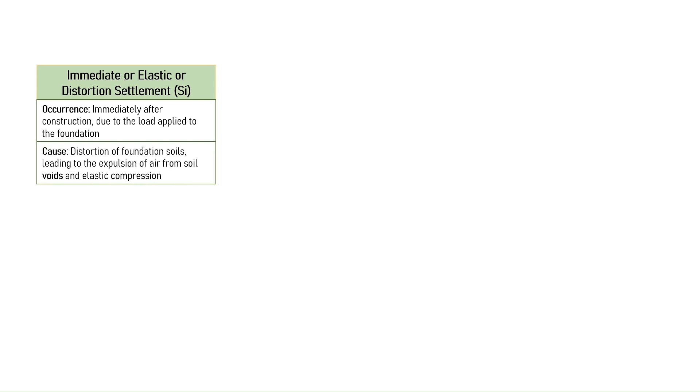Number one, immediate settlement or elastic settlement, also called distortion settlement. Immediate settlement of the soil occurs as soon as a load is applied over the soil, immediately after the construction of the structure due to the distortion of the foundation soil. The load on the soil results in the expulsion of air from the soil voids causing elastic compression of the soil beneath. This process rearranges the soil particles and causes immediate settlement. Immediate settlement is calculated using elastic theory, especially for cohesive soil.